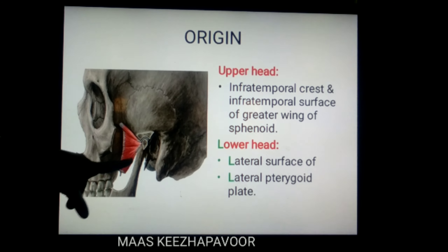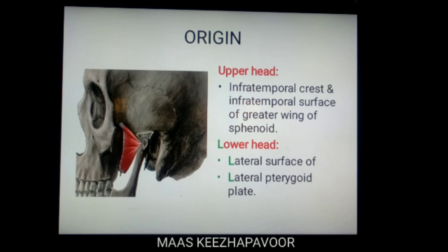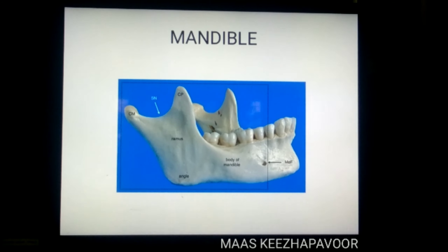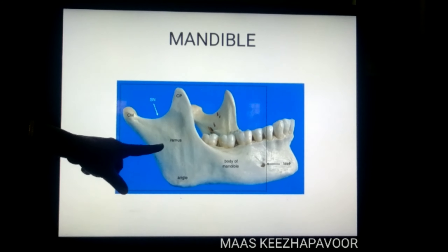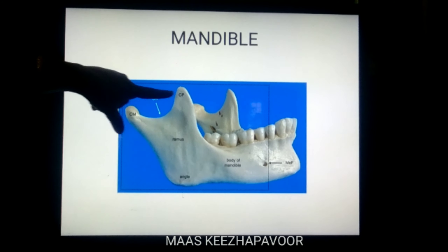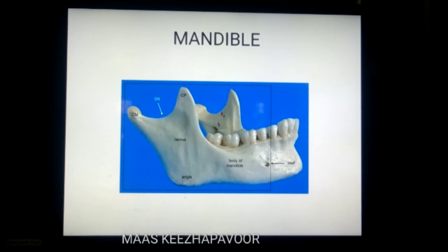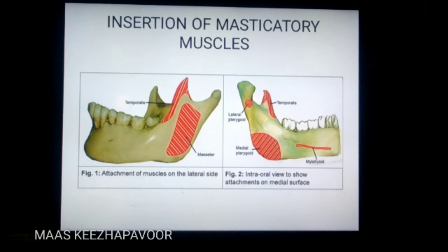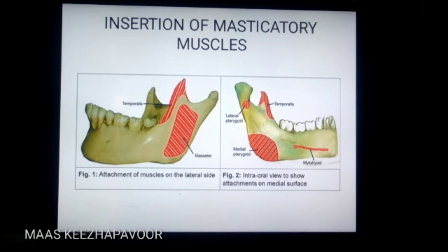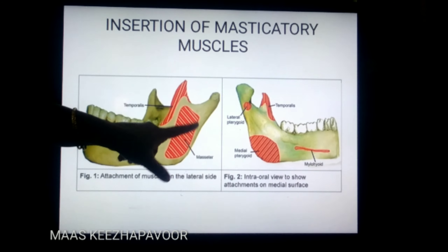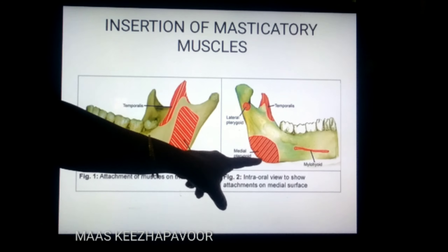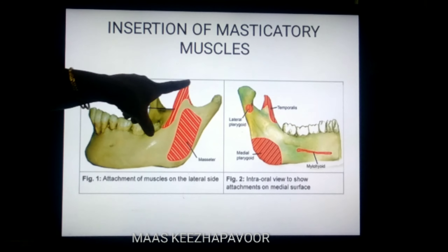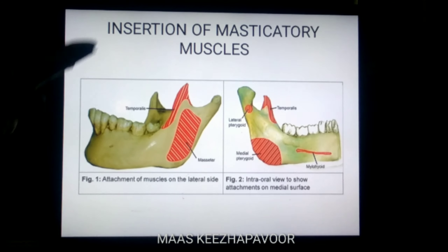The lower fibers run posterolaterally and reach the condyle of the mandible. Now let us see the insertion of lateral pterygoid. Observe the ramus of mandible — it has got two surfaces: one is lateral and the other one is medial, and two processes: coronoid process anteriorly and condylar process posteriorly. All the muscles of mastication — that is, lateral and medial pterygoids, masseter, and temporalis — are getting inserted to the ramus of mandible. The masseter on the lateral surface and medial pterygoid on the medial surface of the ramus, below and behind the mandibular foramen, are getting inserted. Temporalis is inserted to the coronoid process and lateral pterygoid to the condylar process.